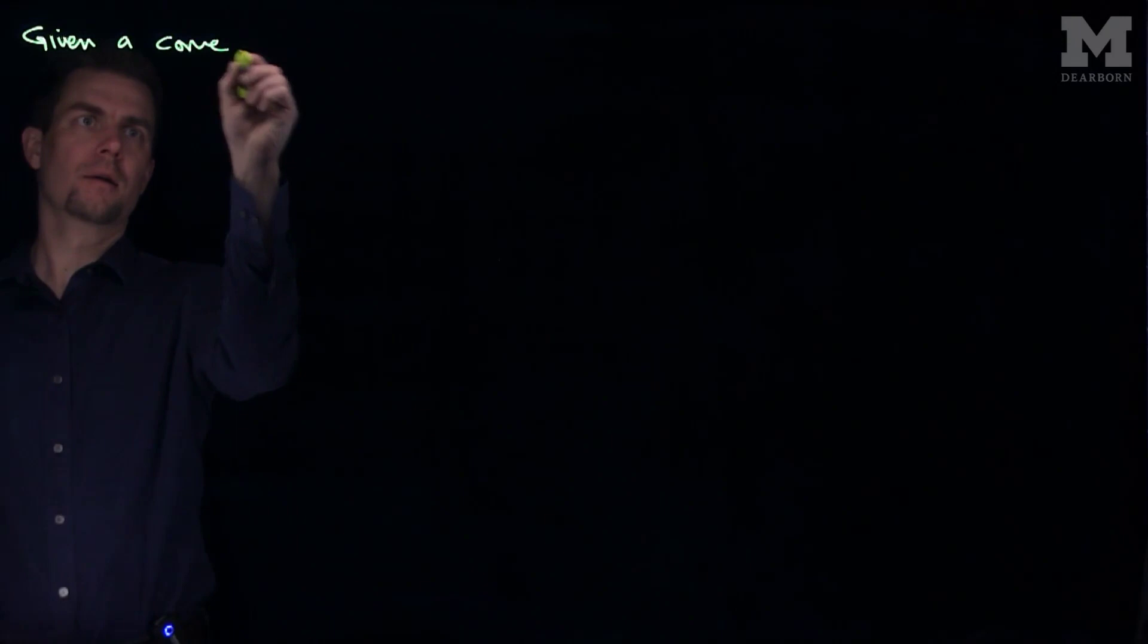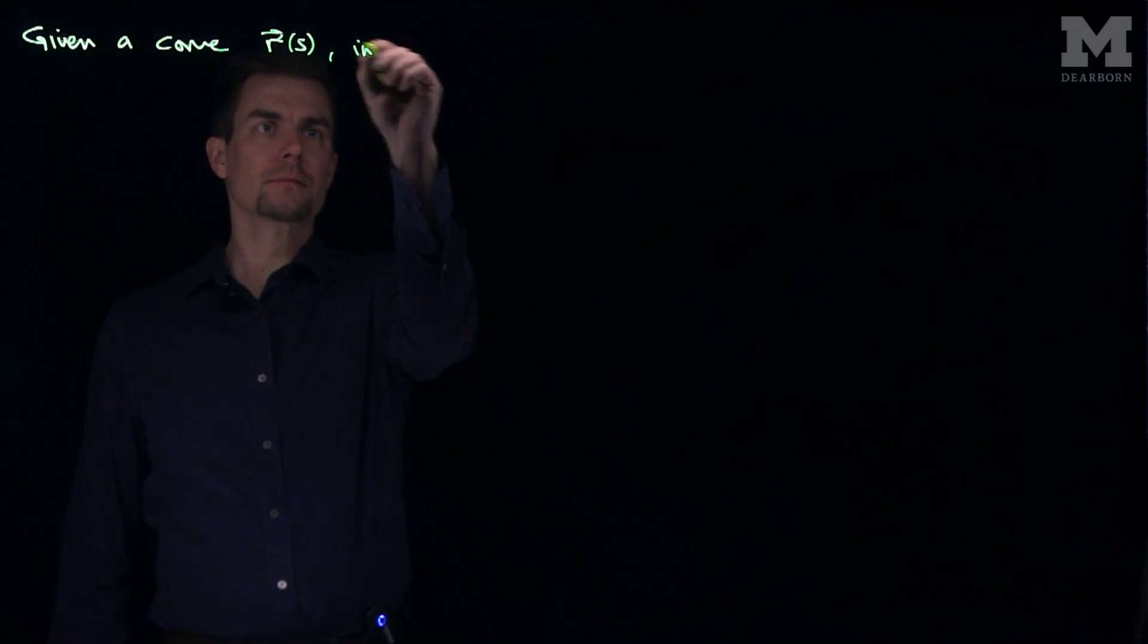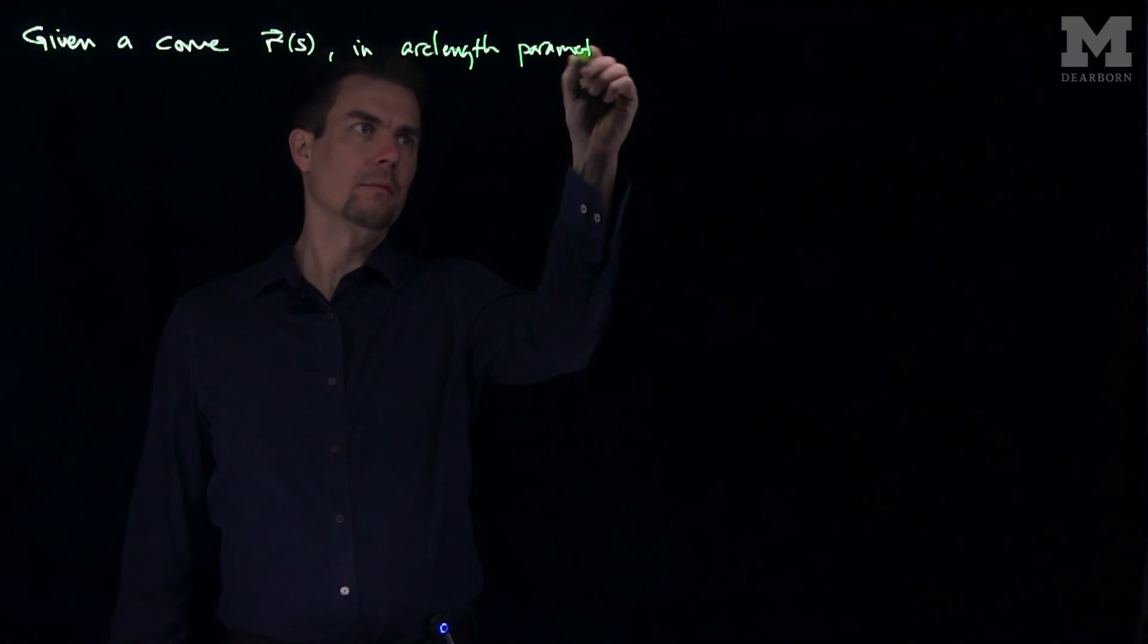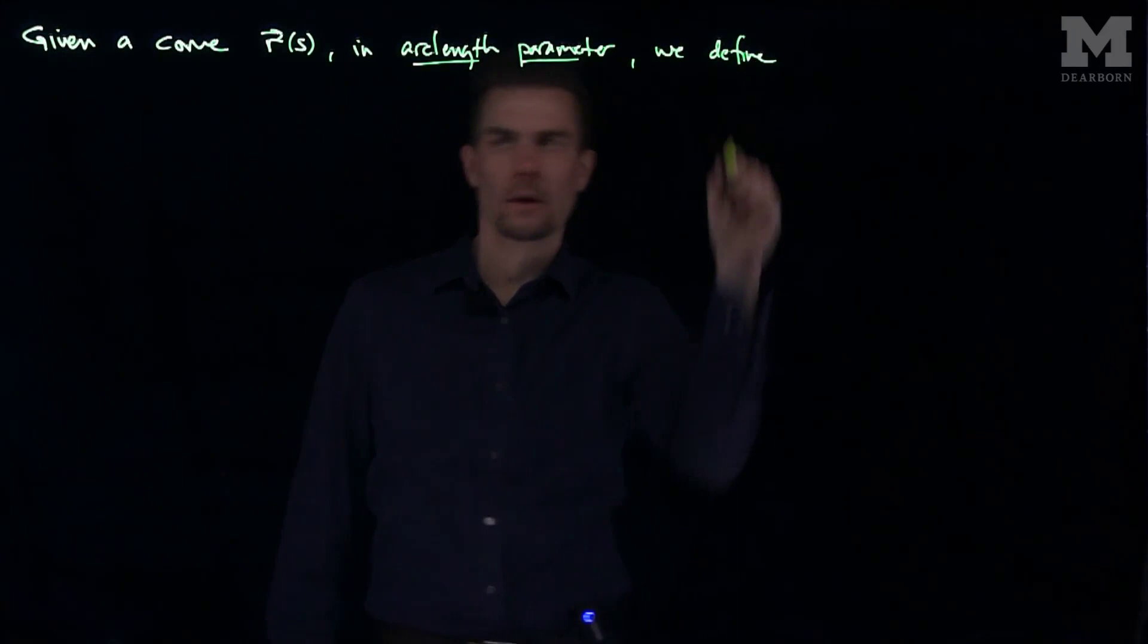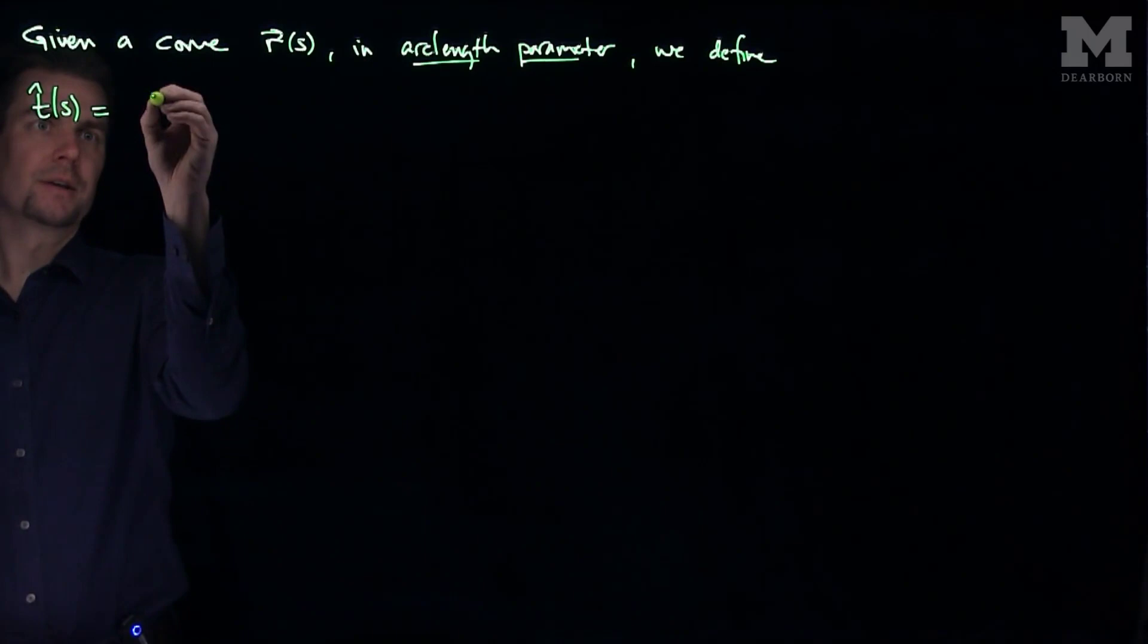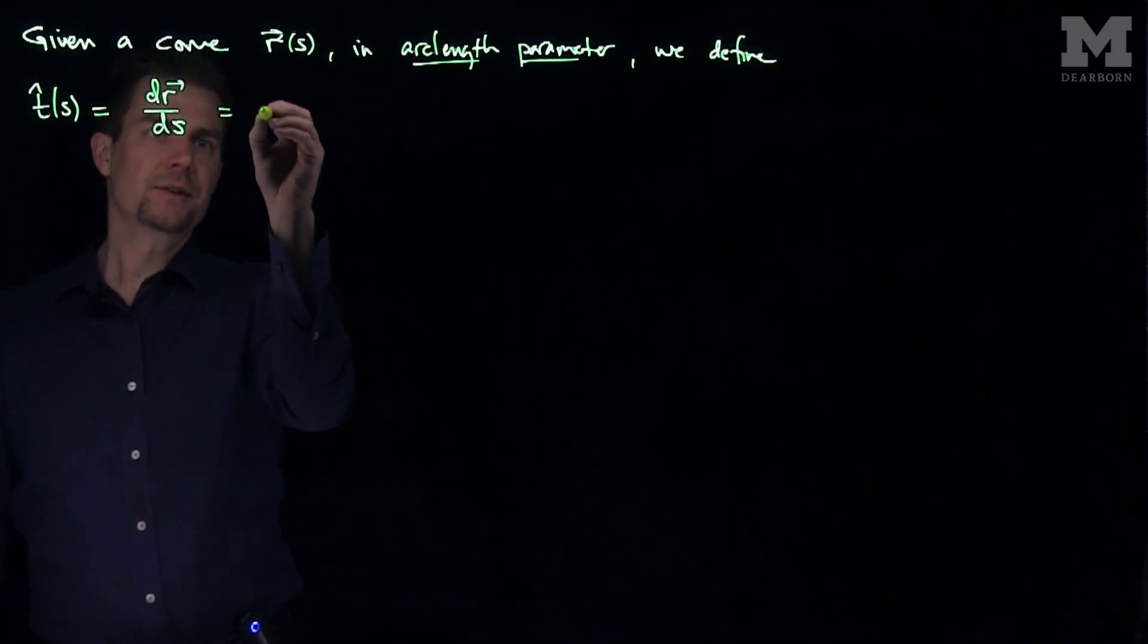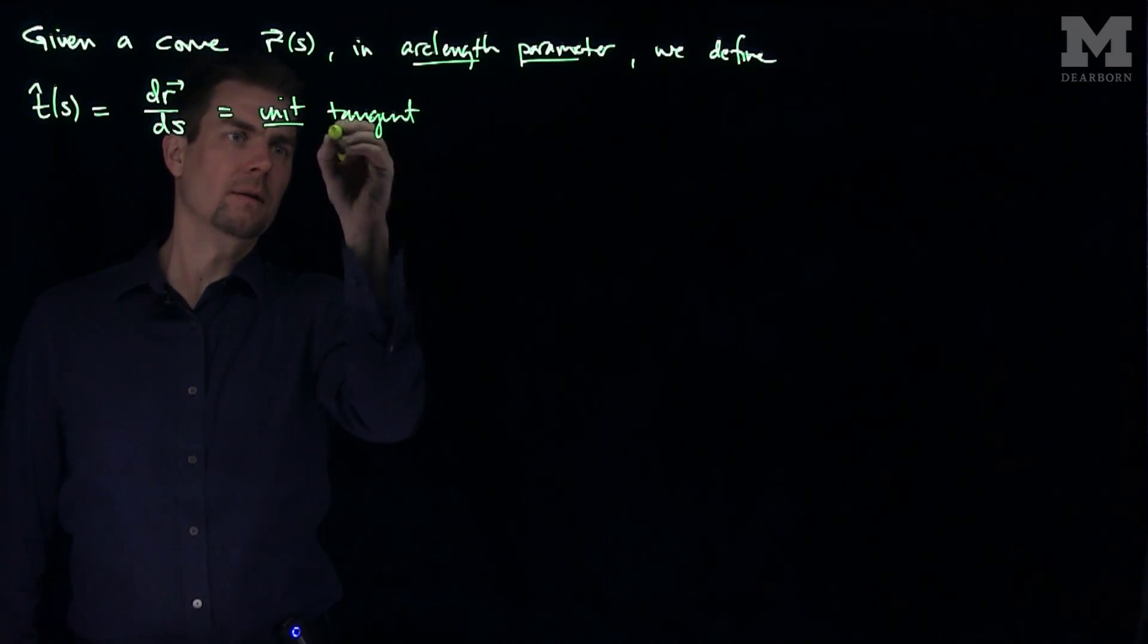So if we're given a curve, R, which must be an arc length parameter, we define the following vectors. t hat of s is dr/ds, the derivative of the curve with respect to arc length parameter, and this is the unit tangent vector.